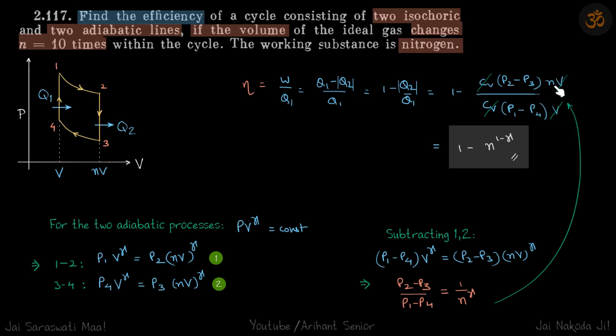Let me write this more clearly. This is the heat in an isochoric process: Cv times n delta T. Because the process is isochoric, V is constant, so n delta T can be written as delta P times V.